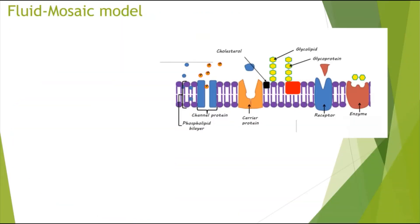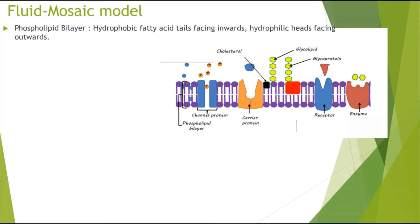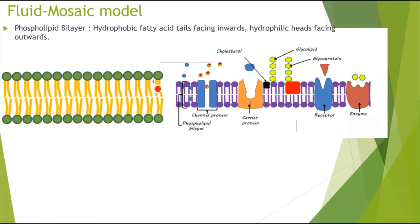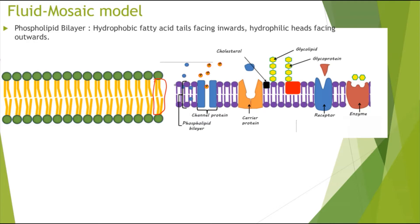This is also called the fluid mosaic model. Starting off, we have the phospholipid bilayer — there is more detail on this in the lipids topic. Ultimately, there are hydrophobic fatty acid tails facing inwards. Because there are two phospholipids it's called a bilayer. The hydrophilic, water-attracting heads are facing outwards. This phospholipid bilayer allows the passage of small, lipid-soluble, and uncharged molecules.